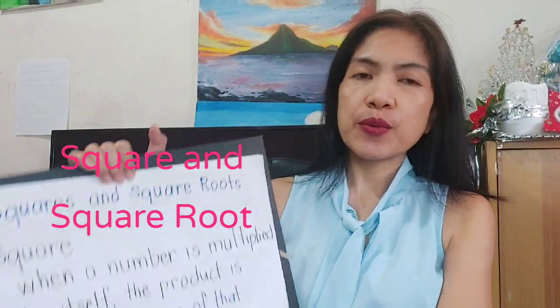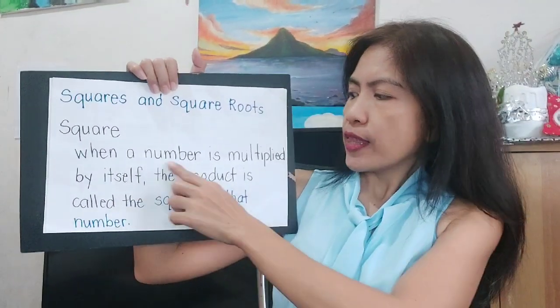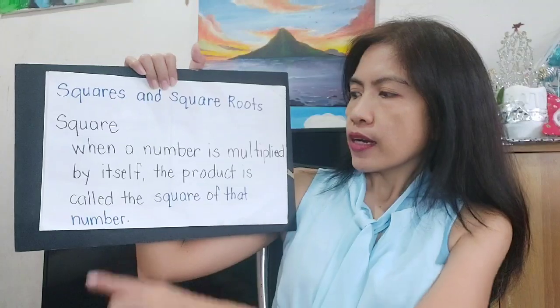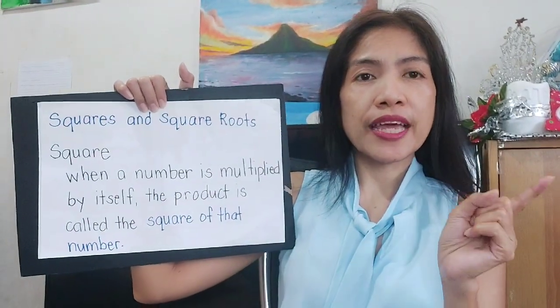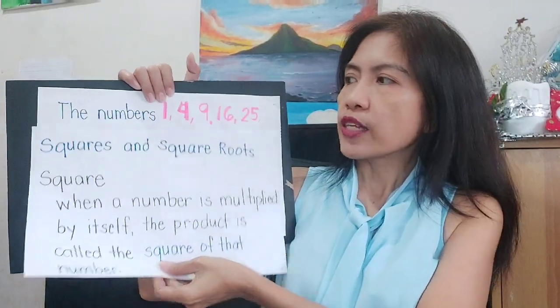Good day! This is Teacher Eye and in today's video, I am going to share with you about the square and the square root. So when we say square — when a number is multiplied by itself, the product is called the square of the number. So we're going to multiply the number to itself. That's the square.